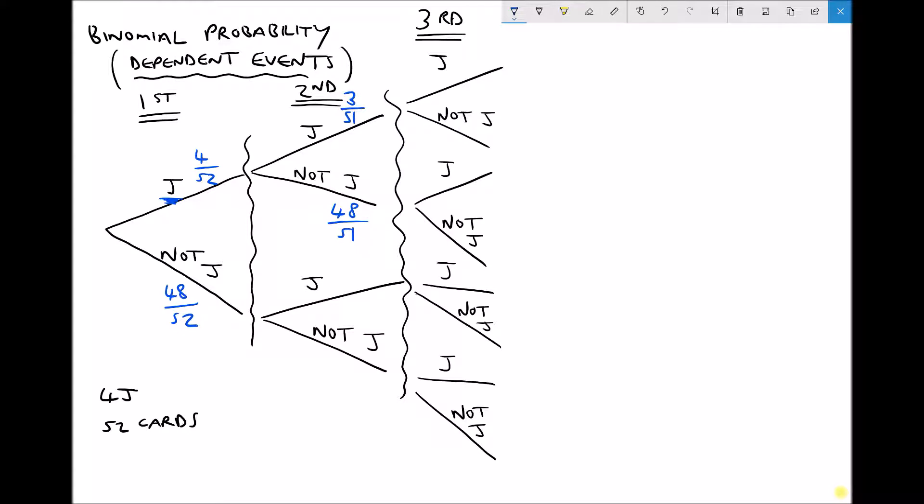But let's take the alternative route. Let's say that first card wasn't a jack. That must mean that there's still four jacks in that pack, but there's still only 51 cards. So now we have 4 cards out of 51 are jacks, meaning that 47 cards out of 51 are no longer jacks.